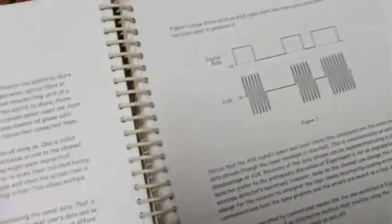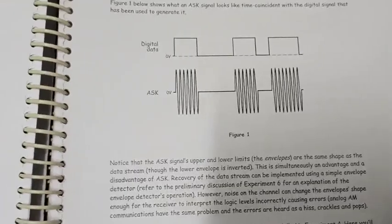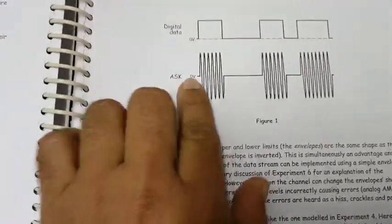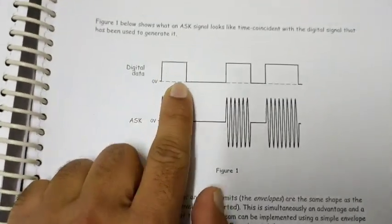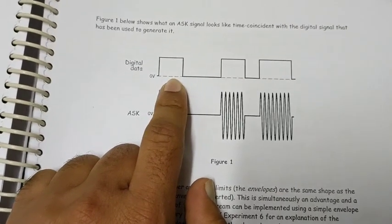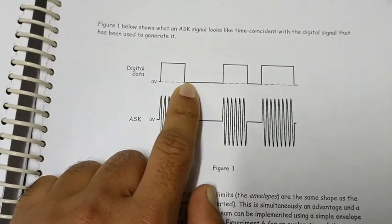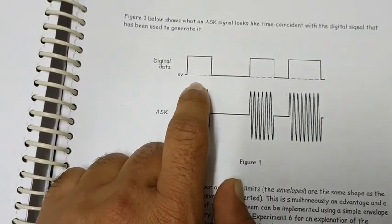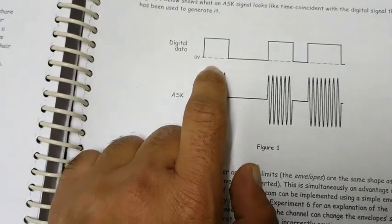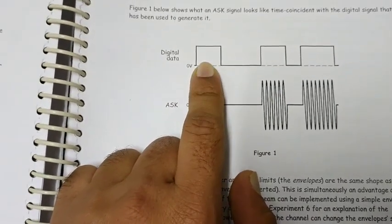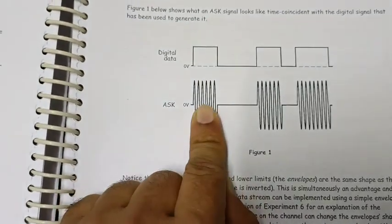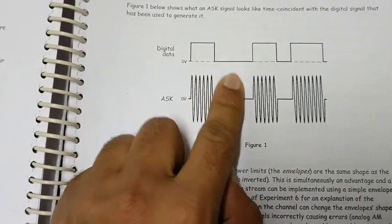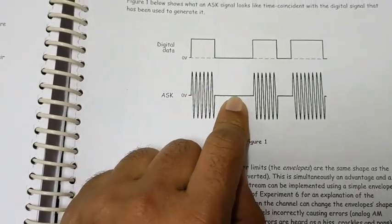First, let's look at the block diagram of this experiment. As you can see, this is the binary sequence which is generated serially in a 1010 pattern. This is the simplest technique because here, in place of 1 there is a carrier signal present, and at 0 there is no carrier present.